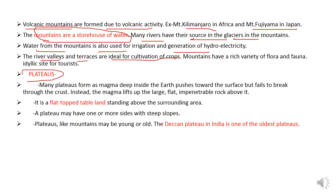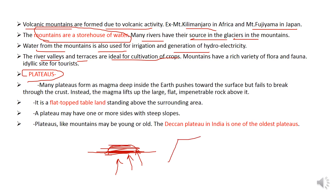Many plateaus are formed when magma inside the earth pushes through the surface but fails to break through the crust. Instead, the magma lifts the large flat impenetrable rock above it. A plateau is a flat-topped tableland standing above the surrounding area. A plateau may have one or more sides with steep slopes.